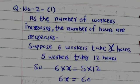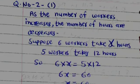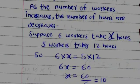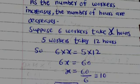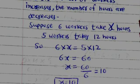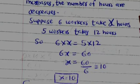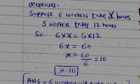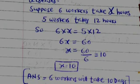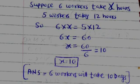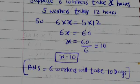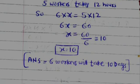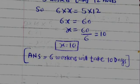Question number 2.1. As the number of workers increases, the number of hours decreases. Suppose 6 workers take x hours. 5 workers take 12 hours. So, equation is 6 x x equals 5 x 12. 6x equals 60. x equals 10. Answer is 6 workers will take 10 days. At last, write specific answer for this solution.